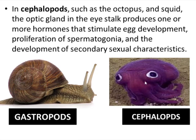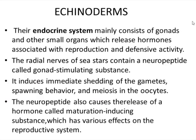The next group is the echinoderms. Echinoderms have highly developed endocrine systems. The endocrine system of echinoderms mainly consists of gonads and other small organs which release hormones associated with reproduction and defense activity. The radial nerves of the sea star contain a neuropeptide called the gonad-stimulating substance, which induces immediate shedding of gametes, spawning behavior, and meiosis in the oocytes.